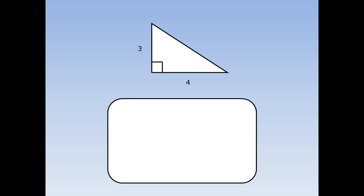Let's work out the area of this triangle. First, I write out the formula: the area of a triangle is base times height divided by 2. The base is 4 and the height is 3, so it's 4 times 3 divided by 2. 4 times 3 is 12, so it's 12 divided by 2, and that's equal to 6 centimetres squared.